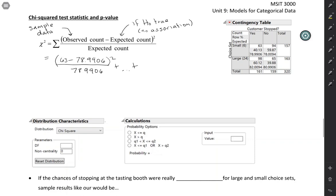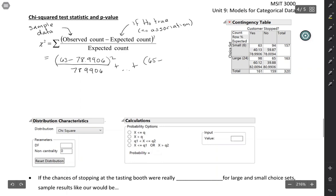So the observed count was 65. The expected was 80.9906. So you would be adding this up for all four cells. I'm just going to be a little bit lazy about writing it all out. And so then we end up with a chi-squared statistic, 12.790.